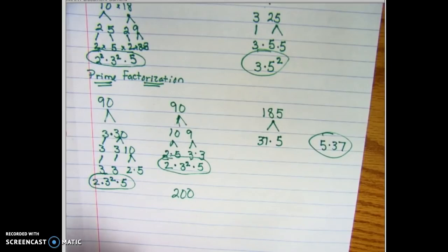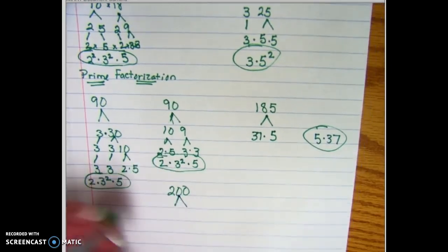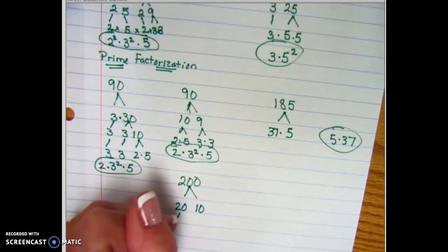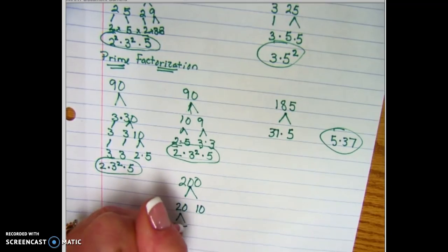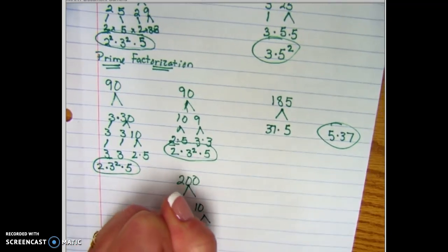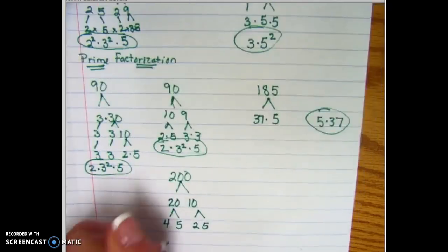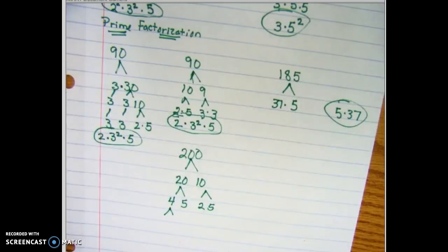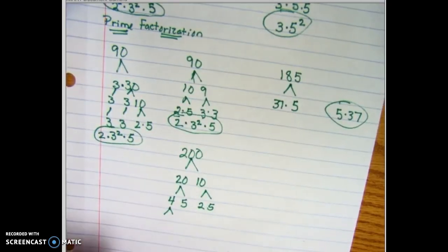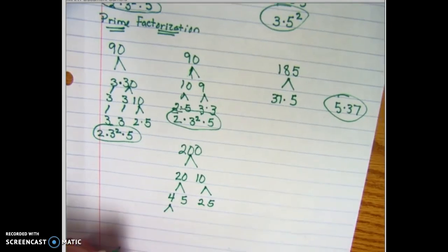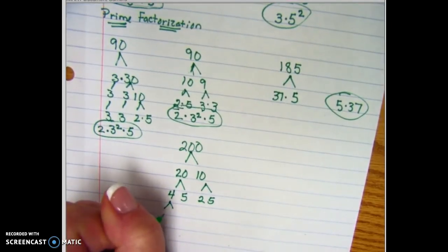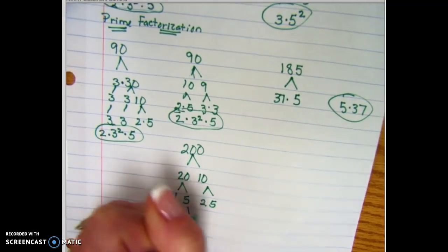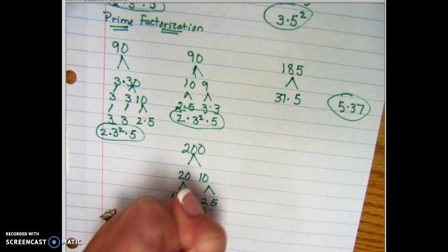Sometimes you have a lot of factors. And so this way I'm going to do 20 times 10, then I'm going to do 4 times 5, then I'm going to do 2 times 5. The 4 is going to break down. Okay, sorry, I had an interruption there and then I lost my pen for a minute. So here we go, we're going to break this 200 down a little bit further. And so we're going to have a 2 times a 2, the 5 is going to stay the same, the 2 is going to stay the same - it's prime - and the 5 is going to stay the same.